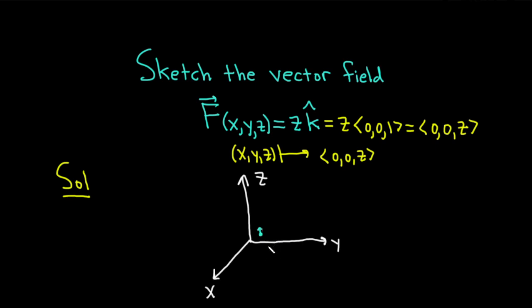Likewise, if I pick one here, the z-coordinate is fairly small in magnitude, but it's negative, right? Because the negative z-axis is down here. So it's going to look something like this.